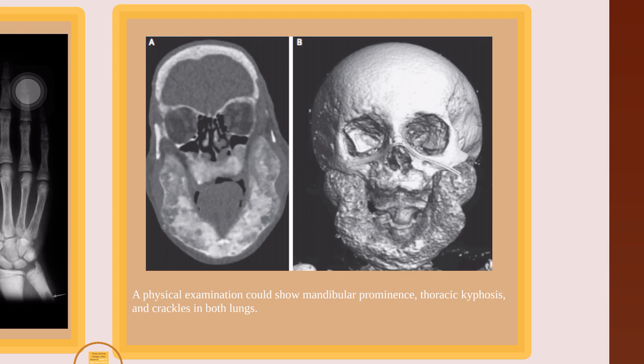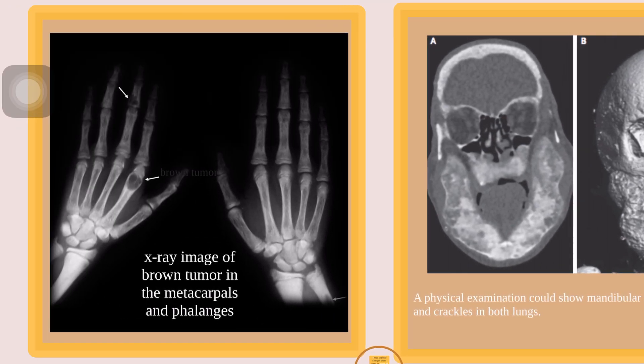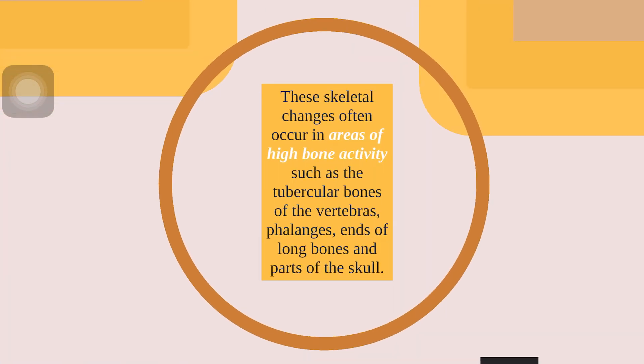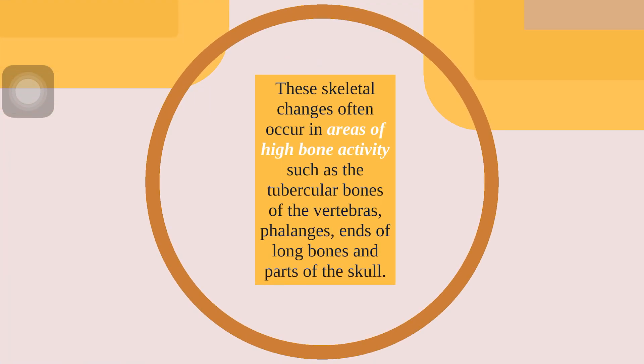A physical examination could show mandibular prominence, tricep changes, kyphosis, and crackles in both lungs. X-ray images may show bone tumors in the metacarpals and phalanges. These skeletal changes often occur in areas of high bone activity, such as the trabecular bones or vertebrae, phalanges, long bones, and parts of the skull.